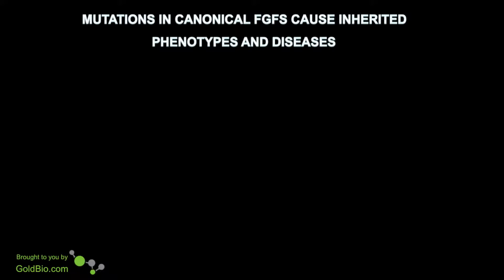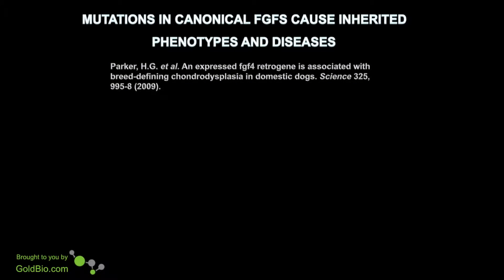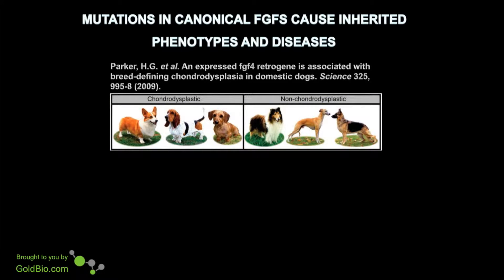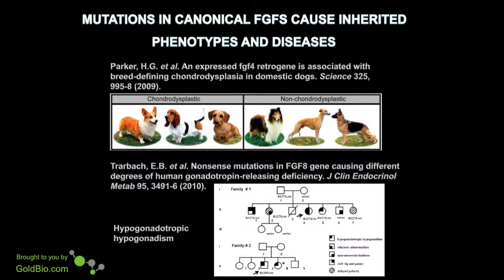Mutations in canonical FGFs also cause inherited phenotypes and diseases. An example can be seen in different breeds of dogs, where chondrodysplastic dogs overexpress fibroblast growth factor 4, leading to a disease similar to achondroplasia with short-limbed dwarfism. On the left side you can see chondrodysplastic dogs compared to normal breeds. Another example is a mutation in FGF8 in humans, which causes hypogonadotropic hypogonadism, affecting the reproductive ability of these patients.